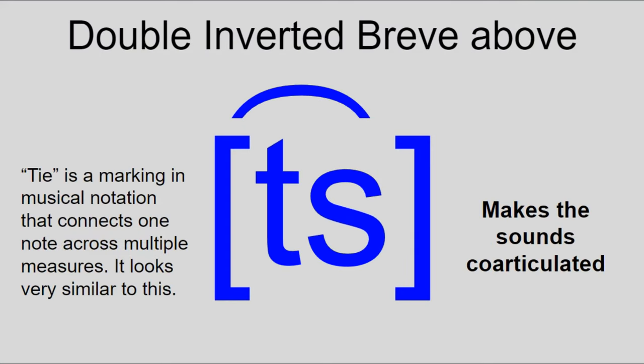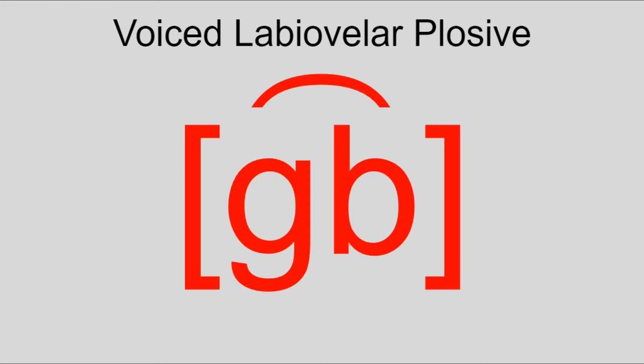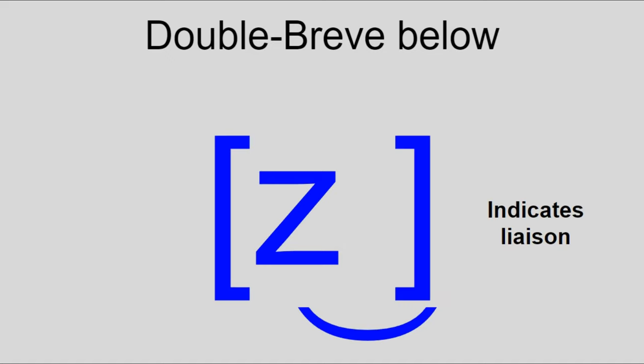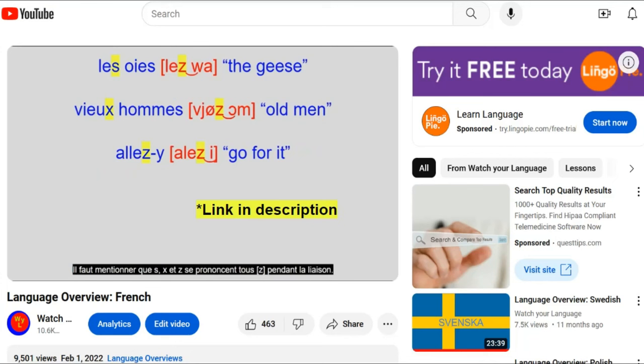Finally, for consonant diacritics, we have the double-breves, or ties. A double-tie above two consonants indicates co-articulation, either as an affricate or otherwise — like the bilabial-velar stop phoneme found in several African languages like Igbo. A double-breve can also be put below the space between two words to indicate liaison — that a normally silent consonant is pronounced at the beginning of the following word due to a vowel.